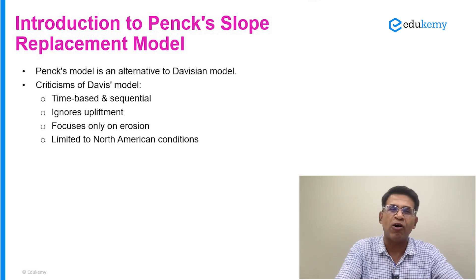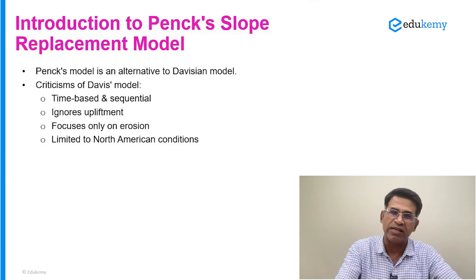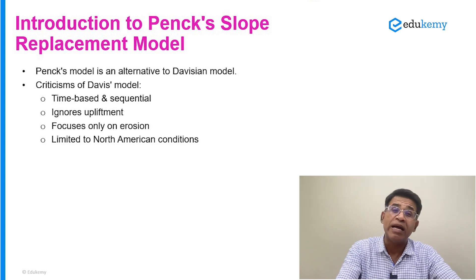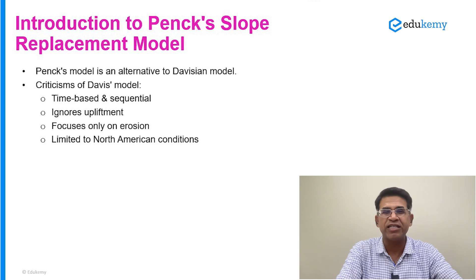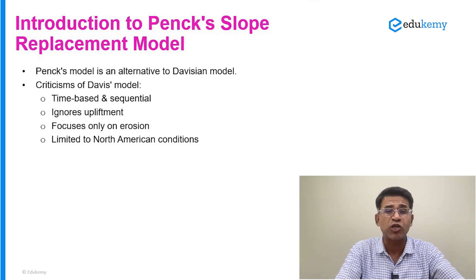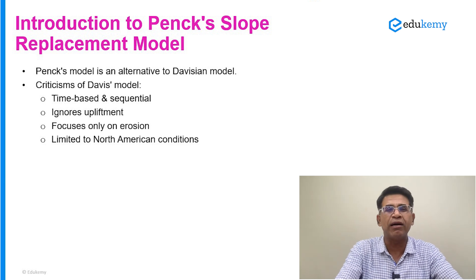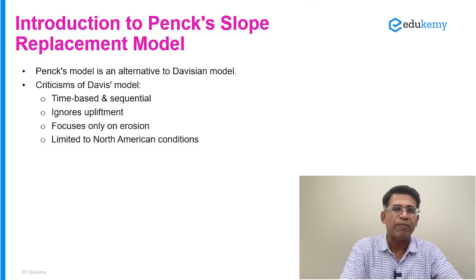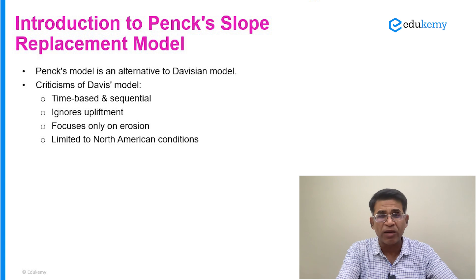Peng's model is an alternative to the Davisian model. The Davisian model had three important elements: first, it was a time-based model; second, it ignored the role of upliftment and talked only about erosion; third, Davis talked about unidirectional changes and did not address how things may not be as sequential as he thought. Fourth, Davis talked about conditions of North America alone and did not consider other climatic conditions — glacial impact, wind impact, or arid conditions.